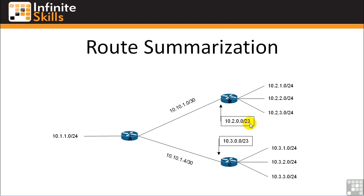A lot of people refer to these as supernets because they cover multiple smaller networks. In this case, the 10.2.0.0/23 route covers all of those smaller /24 networks. If you were to do the VLSM formula on this network and subnet mask, you'd find that the network is 10.2.0.0 and the broadcast is 10.2.3.254, which covers all of those networks. The same applies to the 10.3.0.0 summary route on Router C.